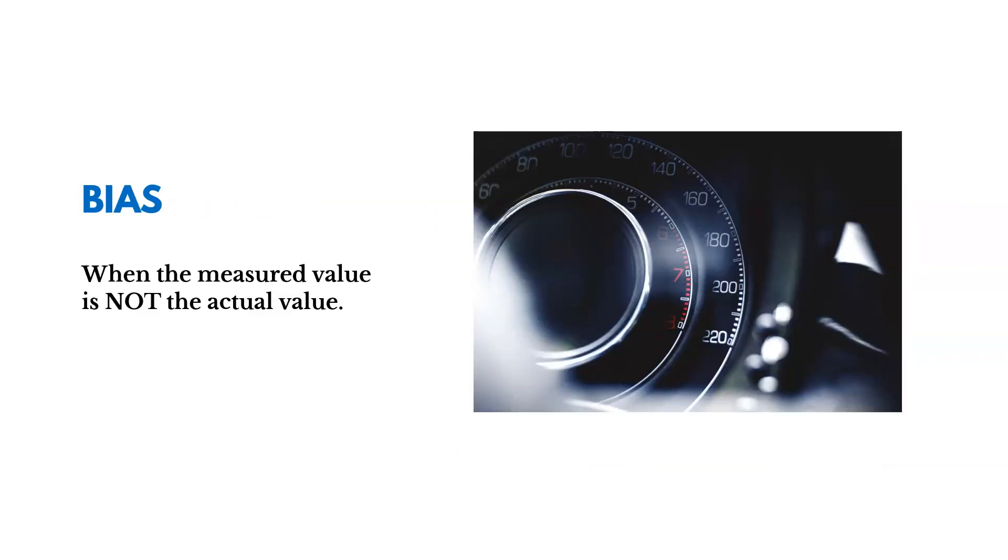And then we look at bias and try to minimize that when the measured value is not the actual value. So it's like if you're driving a car, and your speedometer always says you're 10 miles per hour over. It's got this bias built in. We want to make sure we minimize that.